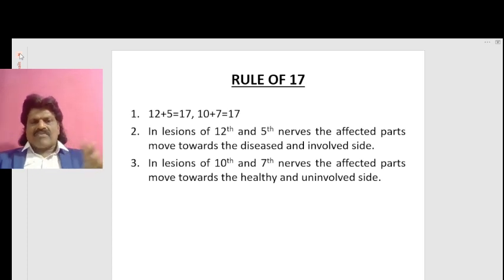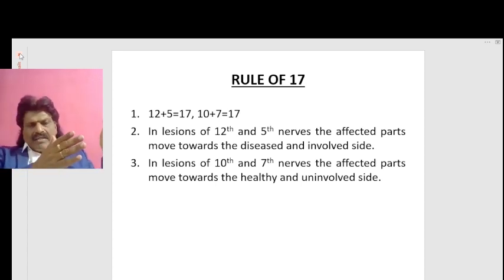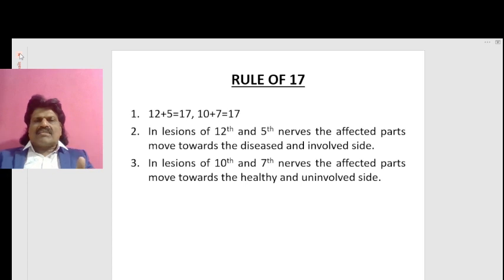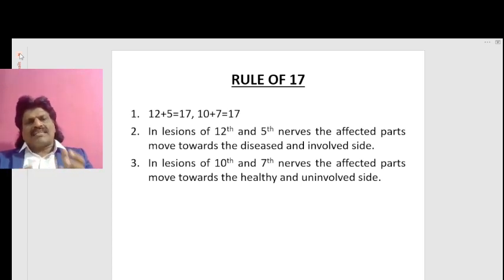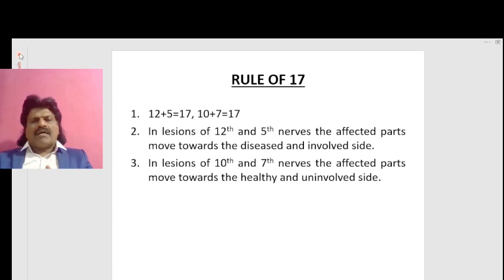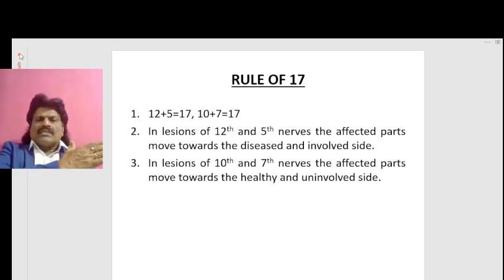12 plus 5 is 17, and 10 plus 7 is also 17. So if the 12th and 5th nerves are affected, their movements are similar together; if the 10th and 7th nerves are affected, their movements are respectively similar. In lesions of the 12th and 5th nerves, the affected parts move towards the diseased and involved side. Since the 12th cranial nerve supplies the genioglossus — which pushes the tongue to the opposite side — if the 12th nerve is affected, the tongue moves towards the diseased side.